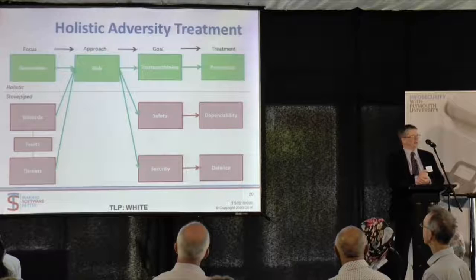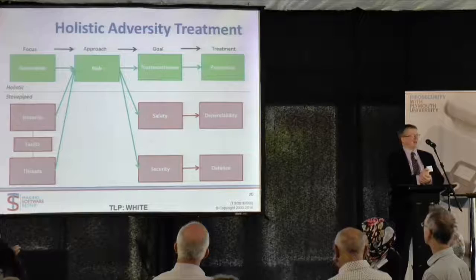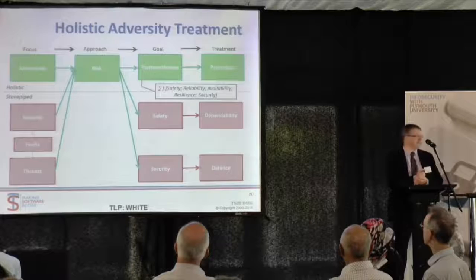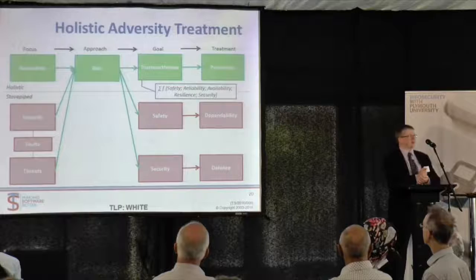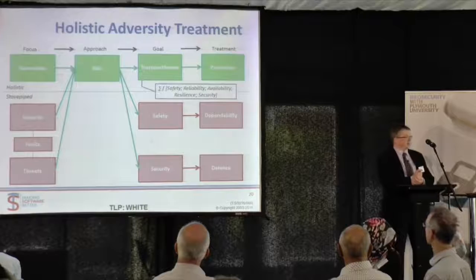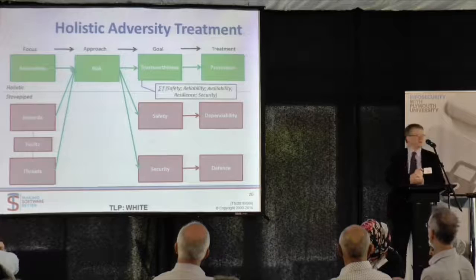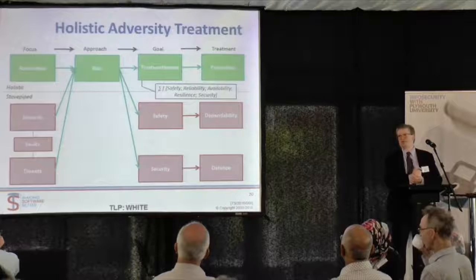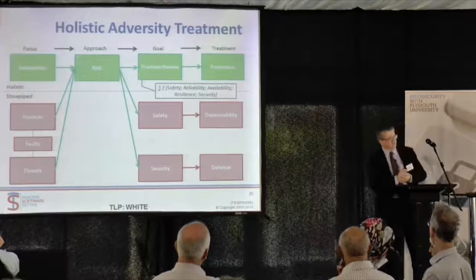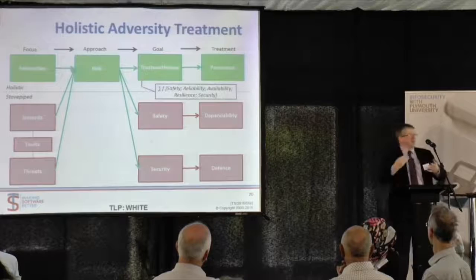Who's responsible for faults? In some organizations you have a safety team and a security team, and both say 'that's the other guy's problem.' Our idea of trustworthiness is that it's the superset. We say you need to look at five factors: Safety, Reliability, Availability, Resilience, and Security — SRAS. Someone should, as part of their risk assessment, consider all of those. We've come across people who say they don't need safety or security, but nobody ever says they don't need availability — their CFO would quickly intervene.